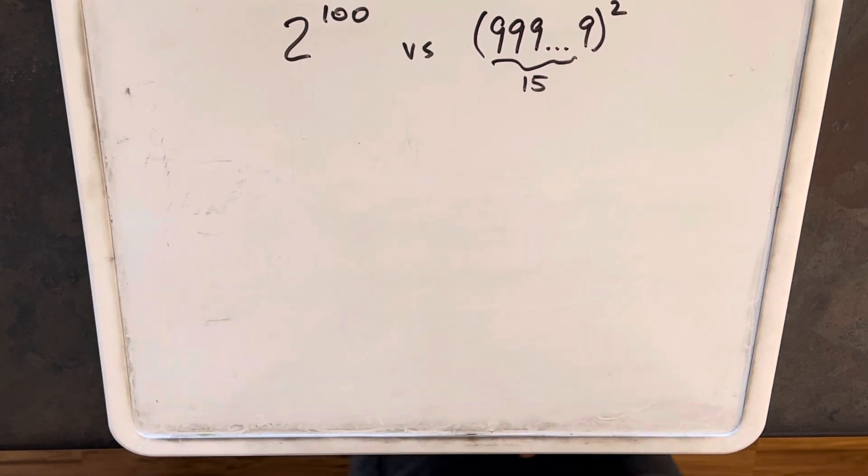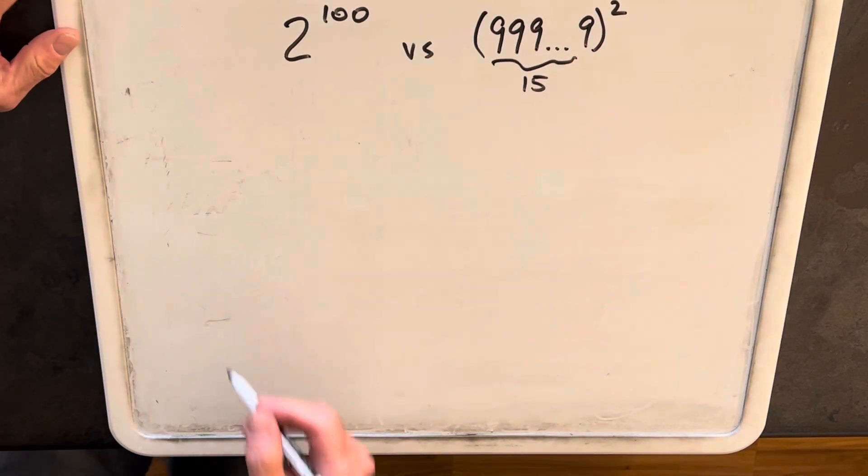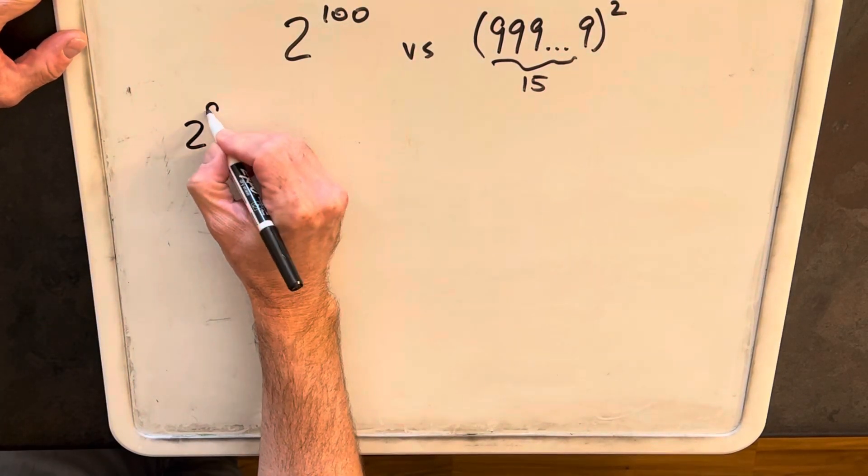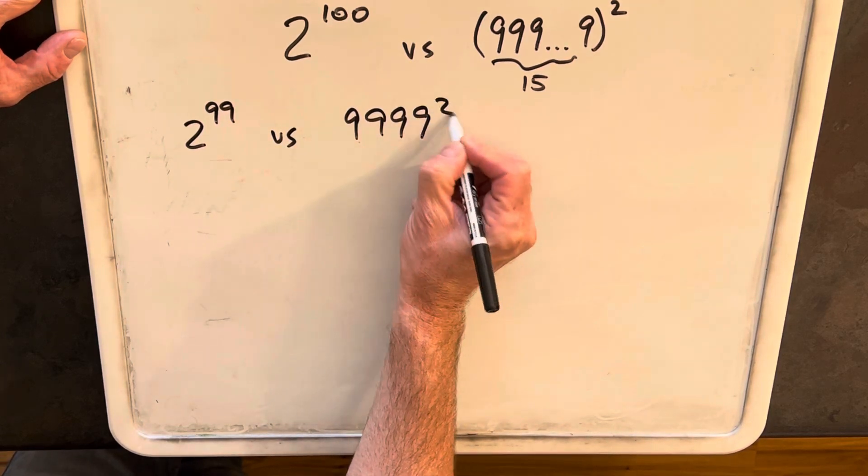Hey, so I have this which is bigger problem on the board. This came from the last video. In the previous video what I did is I compared 2 to the 99 versus 9, 9, 9, 9 squared.